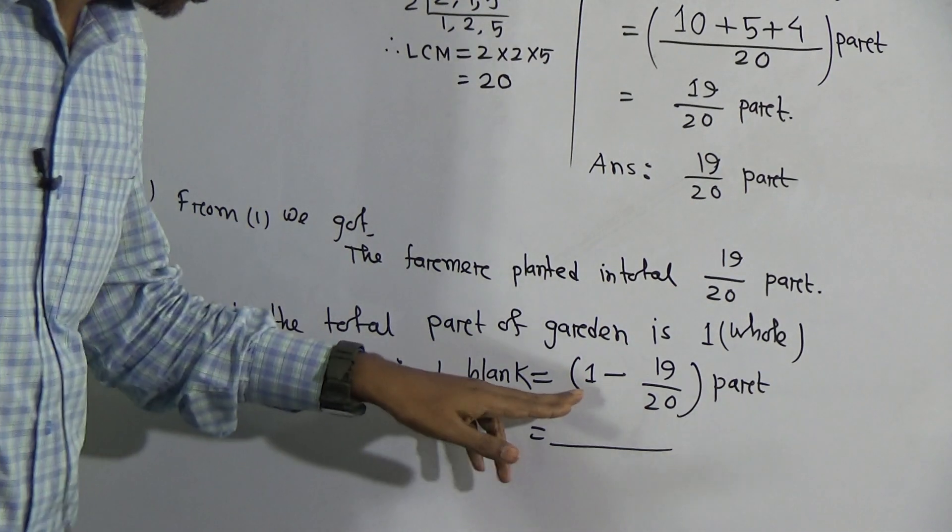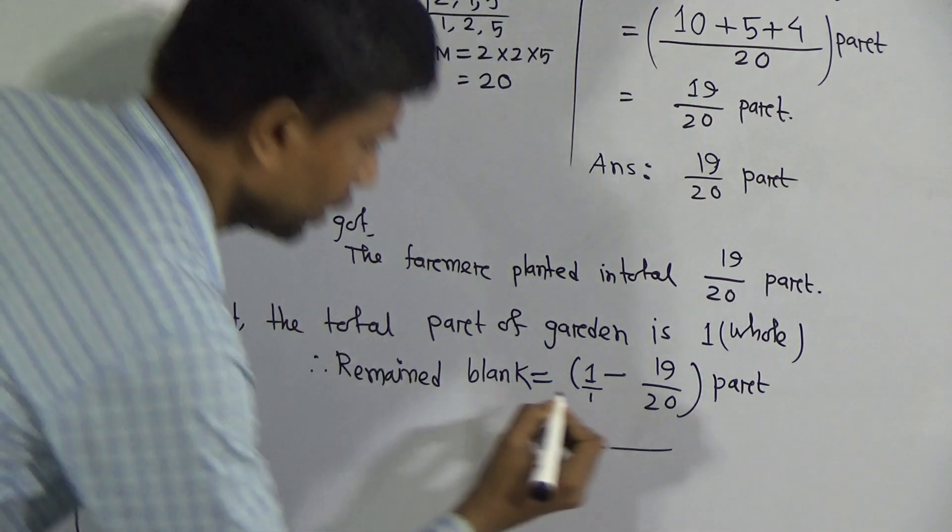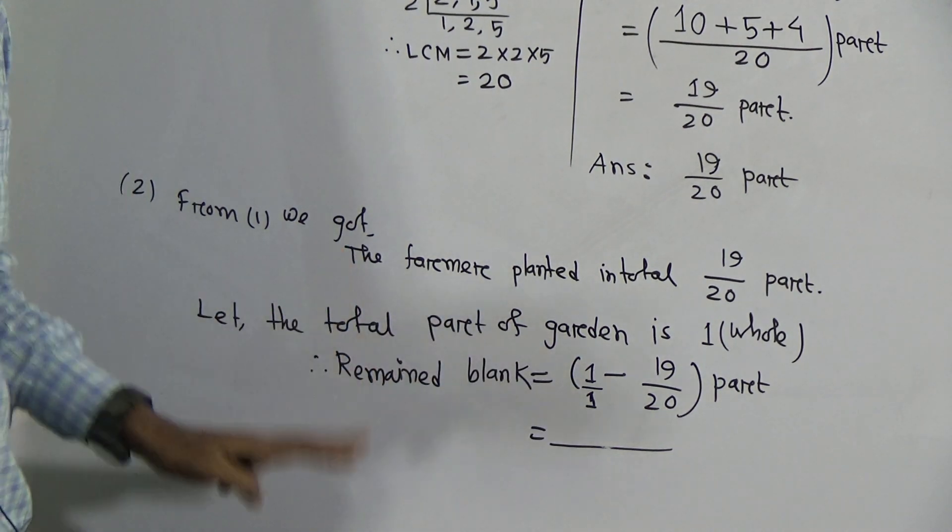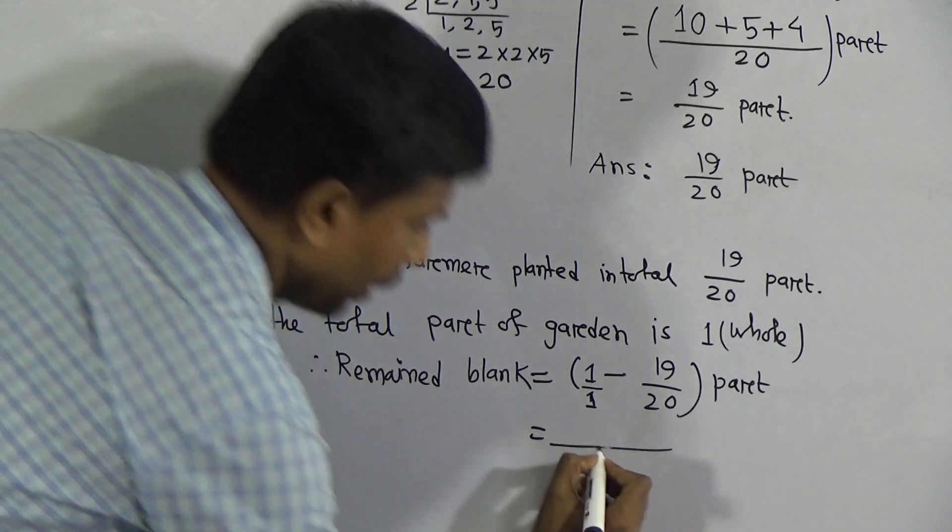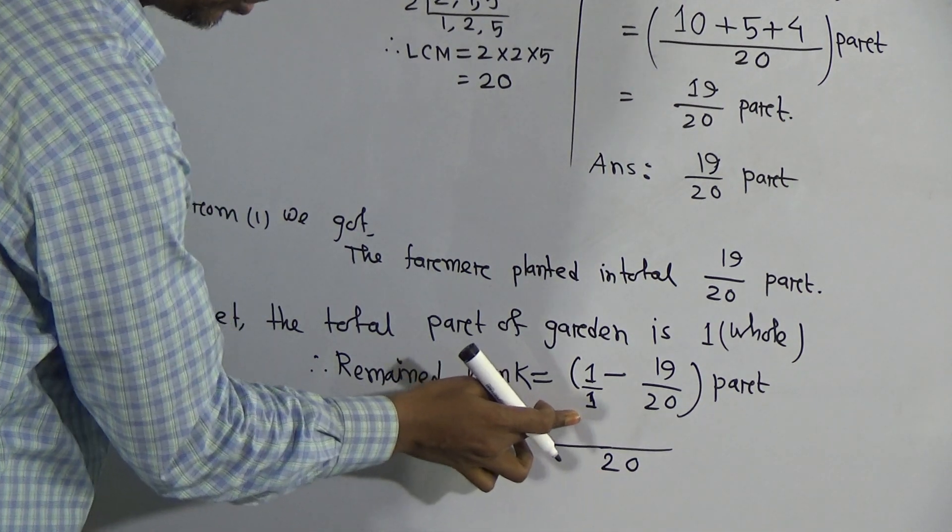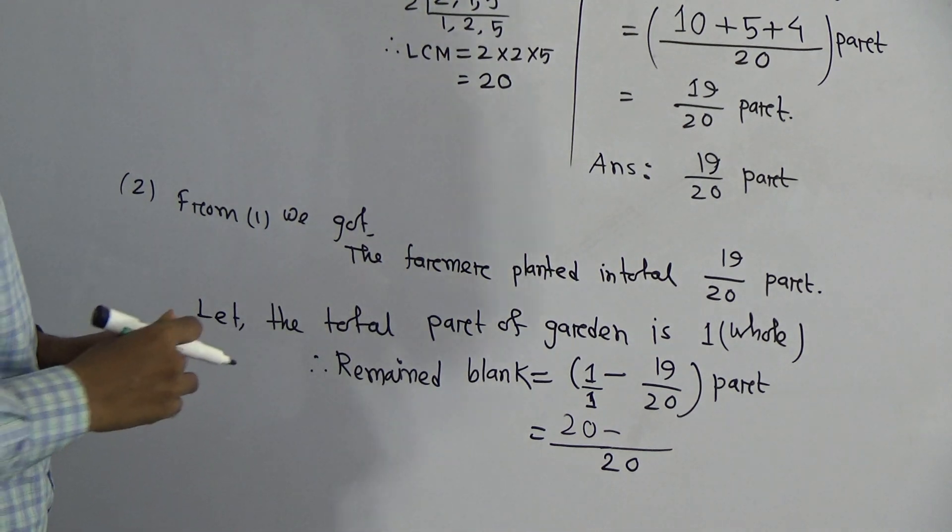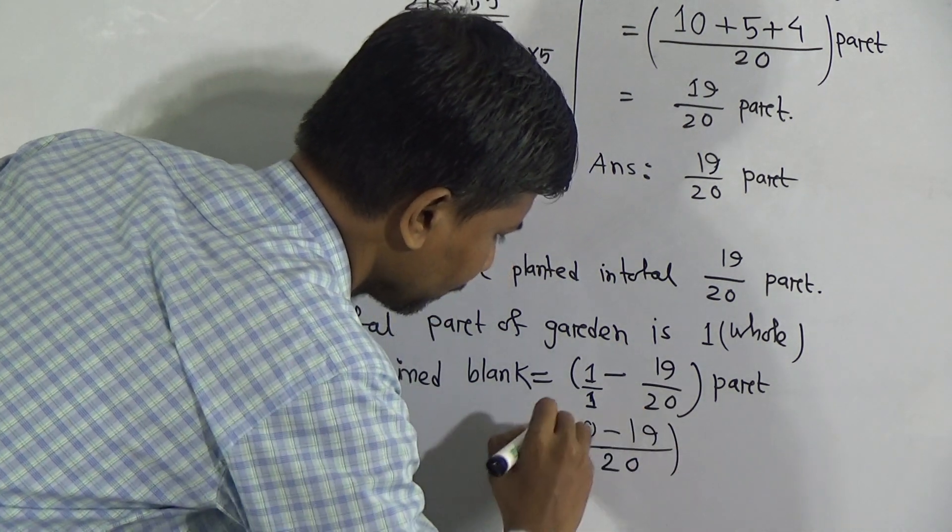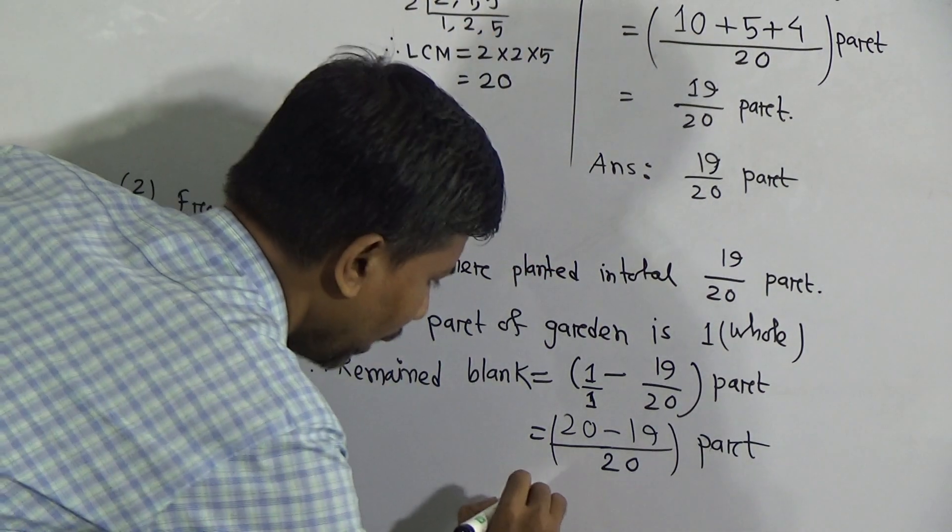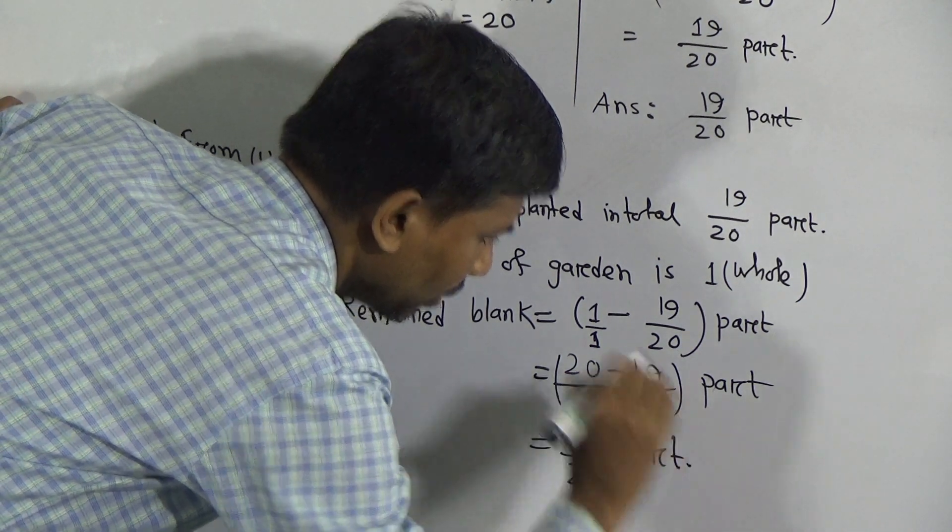Here 1 is numerator and the denominator is also 1. The LCM of 1 and 20 is 20. Write here 20. Same procedure of subtraction: divide 20 by 1, we get 20, multiply with 1, that's 20. Minus divide 20 by 20, we get 1, multiply with 19, we get 19. This equals 20 minus 19, which equals 1/20 part. This is the answer. Write the answer: 1/20 part.